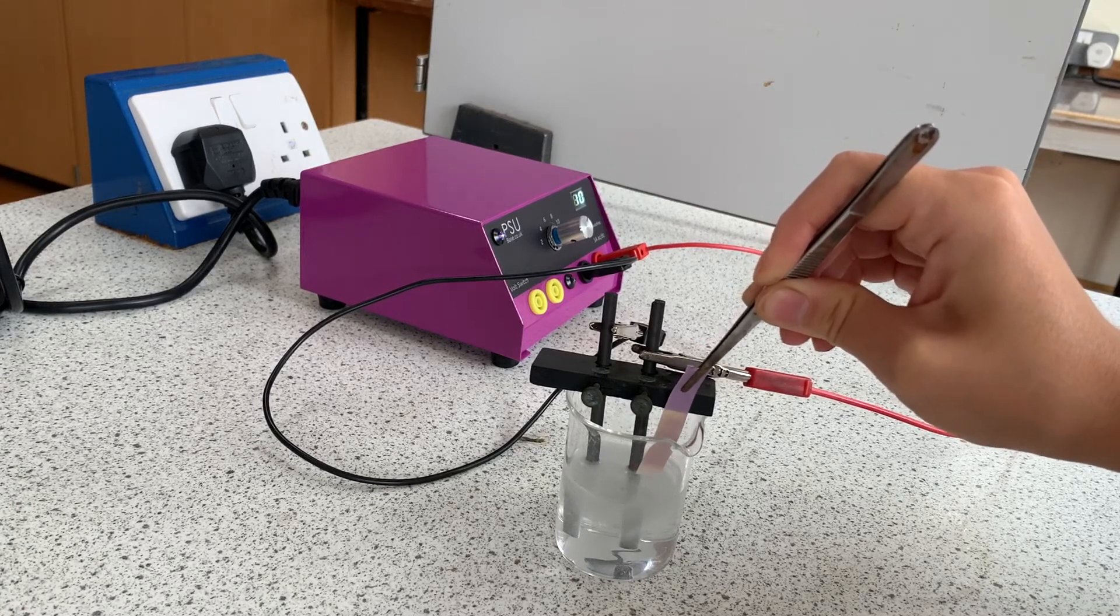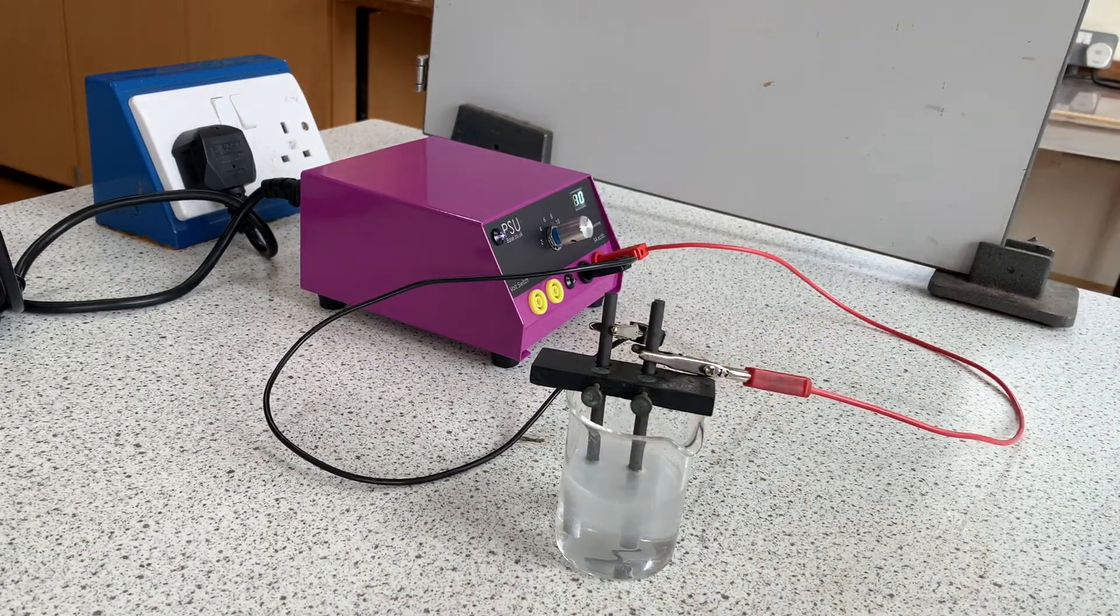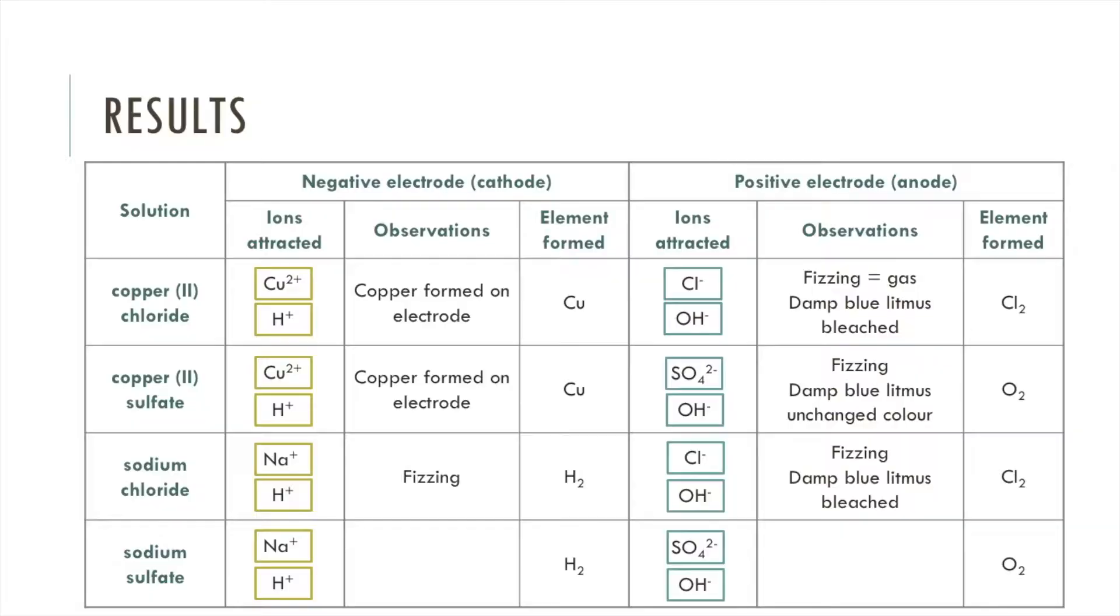We can see that blue litmus paper is bleached by the gas produced at the positive electrode which means it's chlorine. So this time we saw fizzing at both electrodes. At the negative electrode it was hydrogen and at the positive electrode it was chlorine.